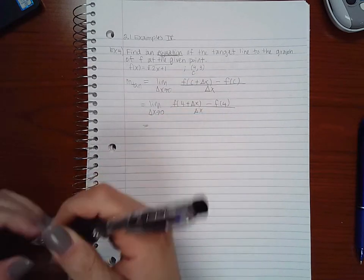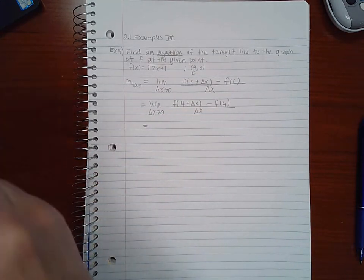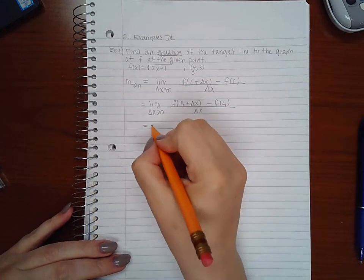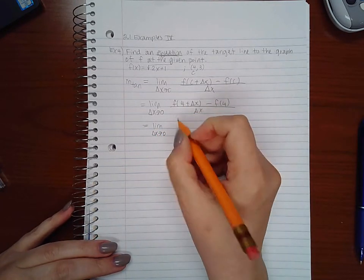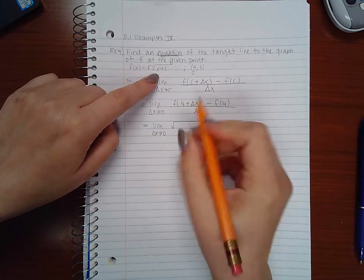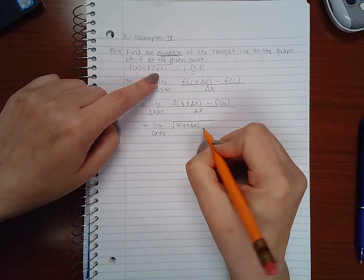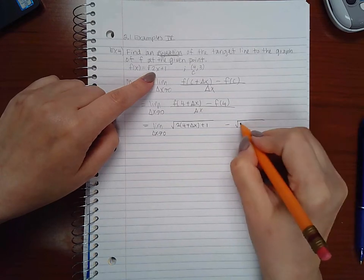So now I'm going to go ahead and plug these values in. When we plug this in, we're going to replace x with four plus delta x, and then here we're going to replace x with four.